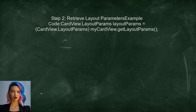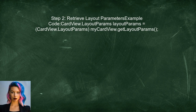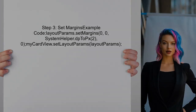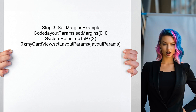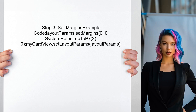Next, the user should retrieve the layout parameters of the card view. This is done by calling the getLayoutParams method on the card view instance. After retrieving the layout parameters, the user can set the margins using the setMargins method. It's important to ensure that the margins are set correctly based on the desired conditions.